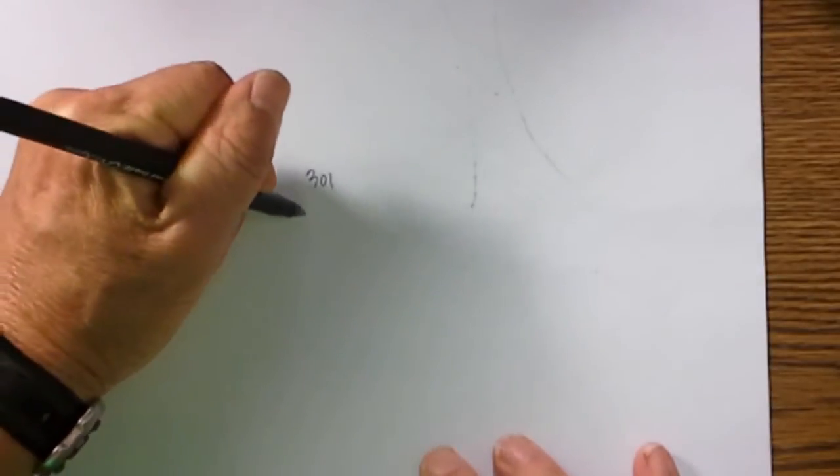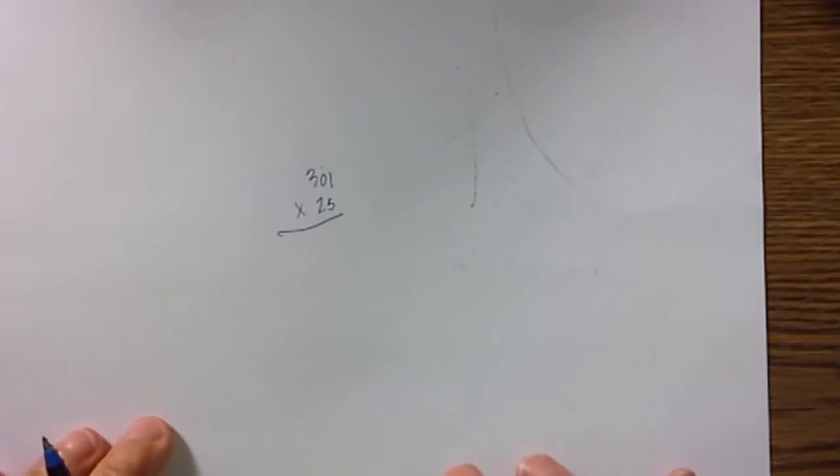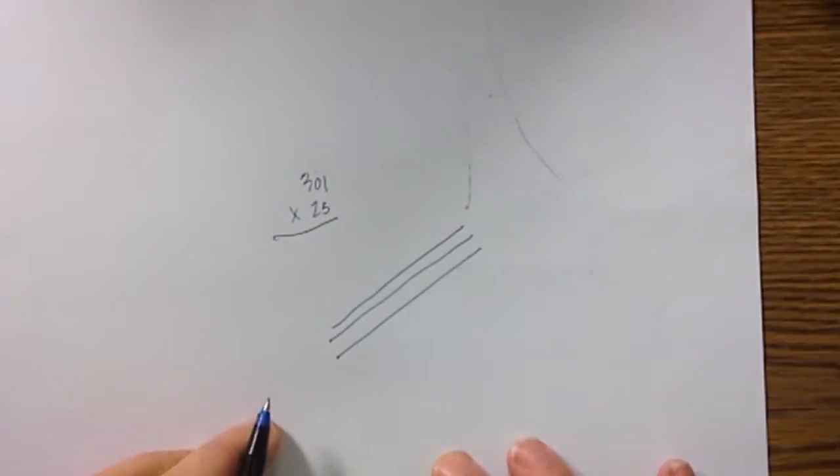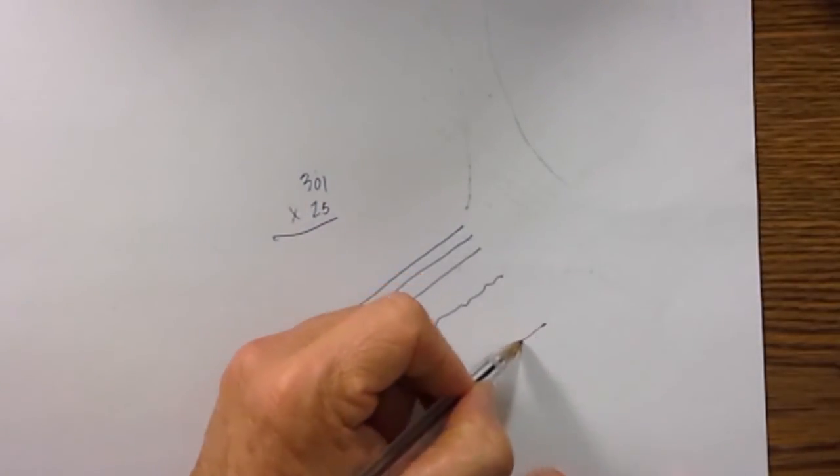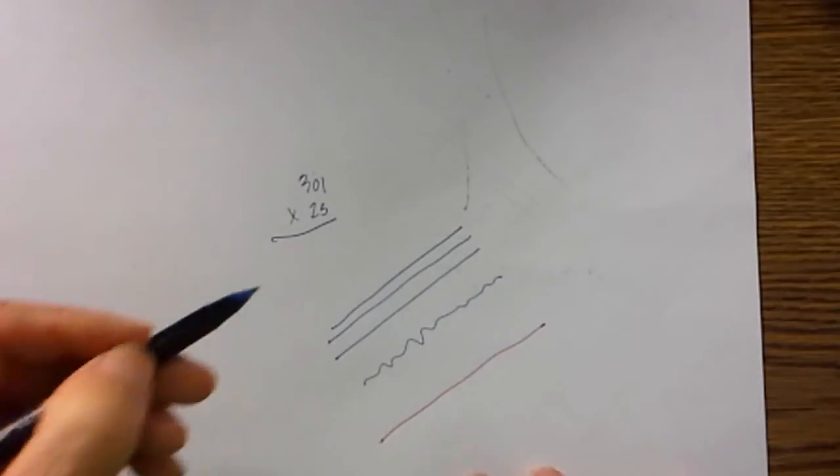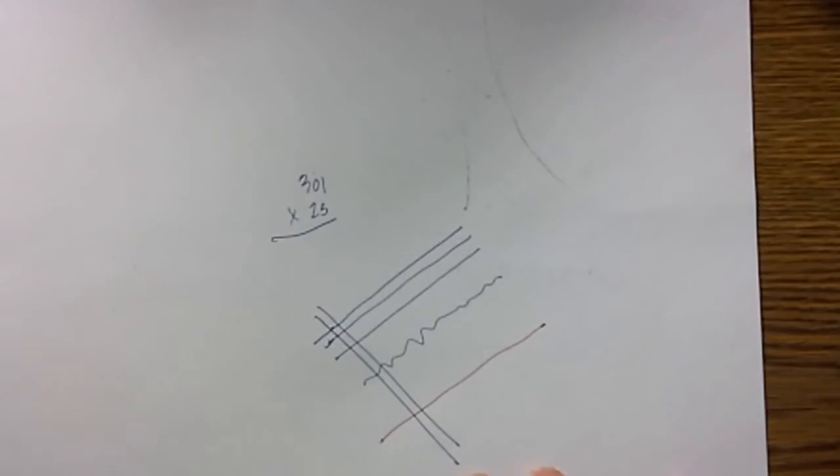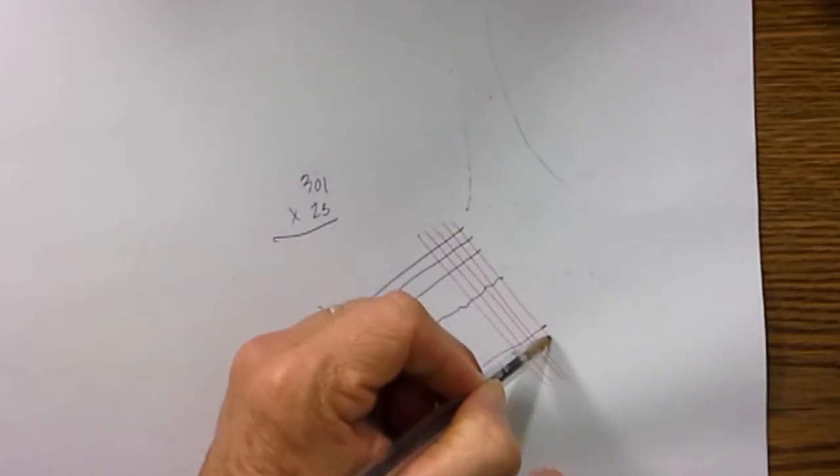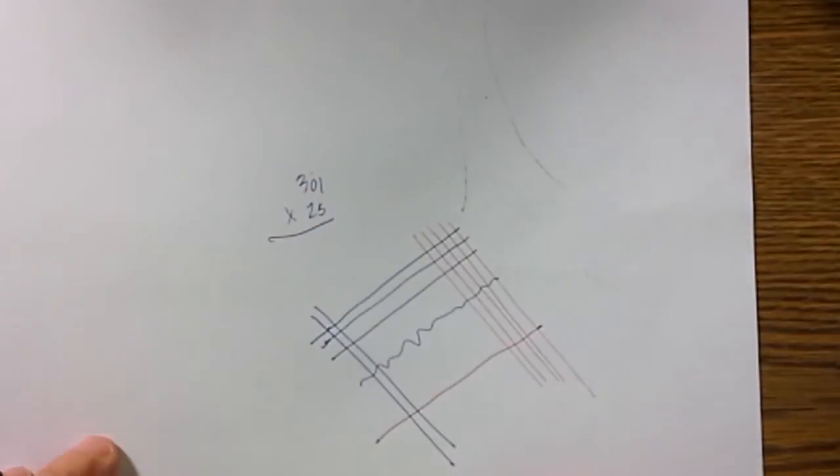Let's get to the last one and I chose it on purpose. It is 301 times 25, and I chose this for a couple reasons. One, it has a zero to show you what to do or how to handle the zero. So let's begin. I've got one, two, three lines for my hundreds, and then I'll go with a squiggly line for the zero, and then a one for the ones. Next we'll move to the other side, I have one, two, and then I'm going to go with five: one, two, three, four, five.